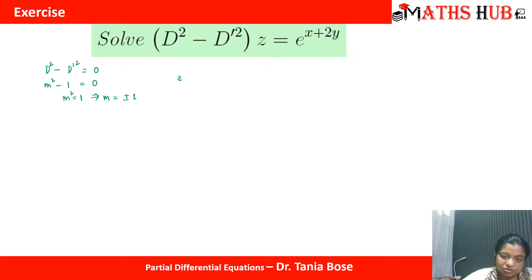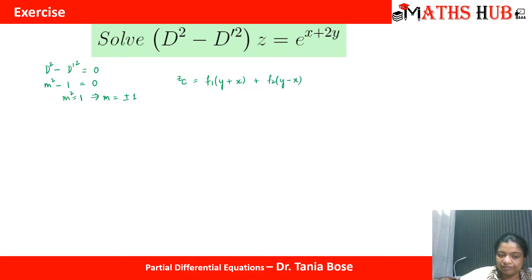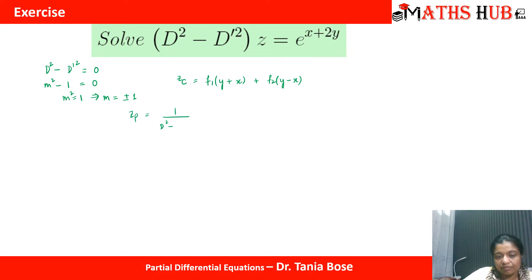So m = ±1. The complementary solution is f₁(y + x) + f₂(y − x). Now let us calculate the particular solution.